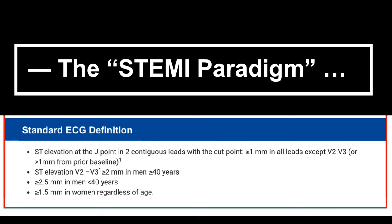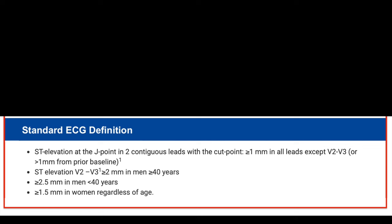STEMI requires ST elevation at the J point in two contiguous leads, with a cutoff of at least 1mm in all leads except V2 and V3, which normally have slight ST elevation. For V2 and V3: 2mm if older than 40, 2.5mm for men younger than 40, and 1.5mm for women. I don't remember these criteria and don't feel bad about it — I find they are not useful.